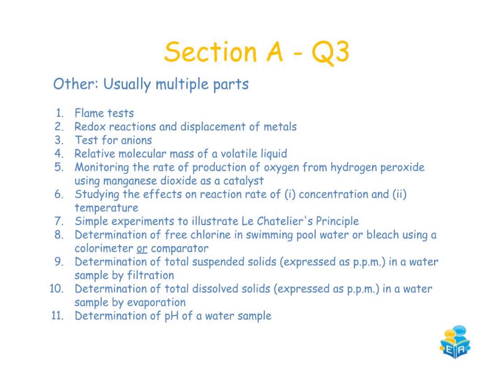The final question in section A is question three, which consists of any other experiments on the Leaving Certificate Chemistry course. Question three is usually split into multiple parts which can comprise of flame tests, tests for anions, finding the relative molecular mass of a volatile liquid. Rates of reaction experiments can also appear here, as can equilibrium experiments, determination of the level of free chlorine in swimming pool water, or suspended solids and dissolved solids from your water chapter.